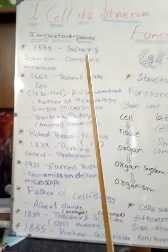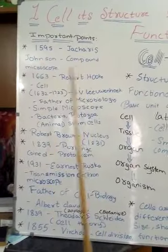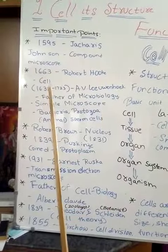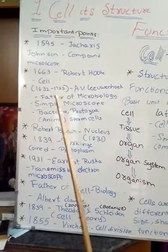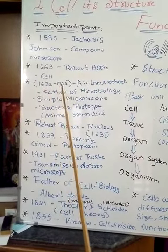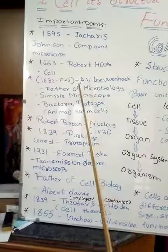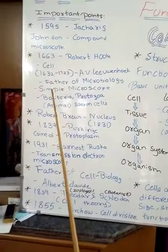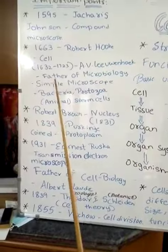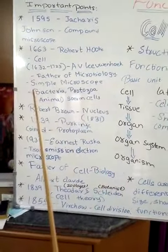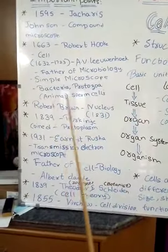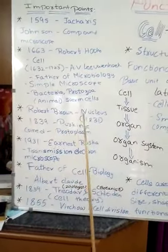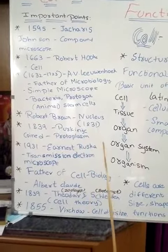In 1595, Zacharias Janssen discovered the compound microscope. In 1663, Robert Hooke discovered the cell. From 1632 to 1723, Anthony van Leeuwenhoek — known as the father of microbiology — used the simple microscope to observe bacteria, protozoa, and animal sperm cells.